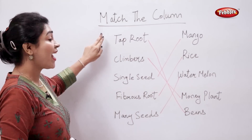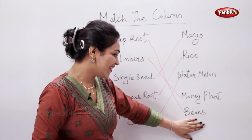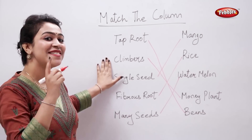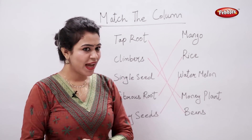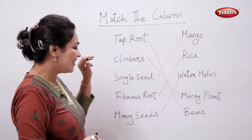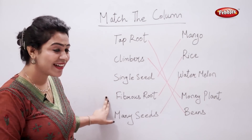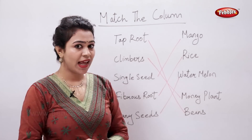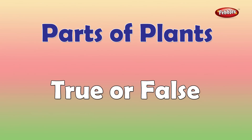Summary: an example of a taproot is bean, an example of a climber is money plant, mango has a single seed, an example of a fibrous root is rice, and watermelon has many seeds.